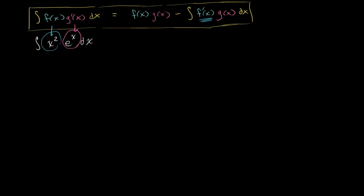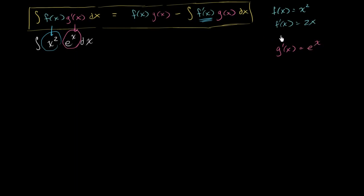So let me write this down. We are saying that f of x is equal to x squared, in which case f prime of x is going to be equal to 2x. I'm not worrying about constants right now; we'll add a constant at the end. And g prime of x is equal to e to the x, which means its antiderivative g of x is still equal to e to the x.